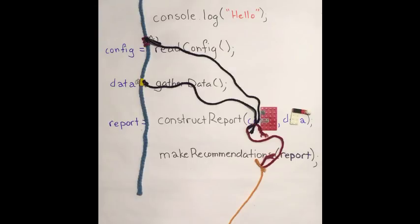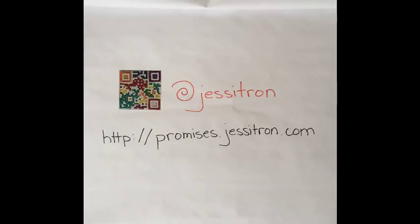The program doesn't exit until all the paths of execution have finished their work. With promises, we get to decide which bits of code wait on which other bits of code, instead of everything waiting on everything else, in the single order that it occurs in the source code.